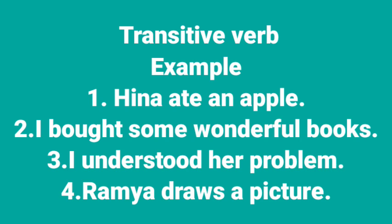Second example: 'I bought some wonderful books.' We can ask: I bought what? — I bought some wonderful books. Third: 'I understood her problem' — I understood what? — her problem. And 'Ramya draws a picture' — Ramya draws what? — a picture. So in these sentences, 'bought,' 'understood,' and 'draws' are all transitive verbs.